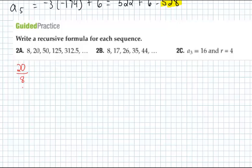20 over 8, that is 5 halves. 50 over 20, that's 5 halves. 125 over 50, that's 5 halves. So they're all equal to 5 halves, which is our R value. That tells you that R is 5 halves.